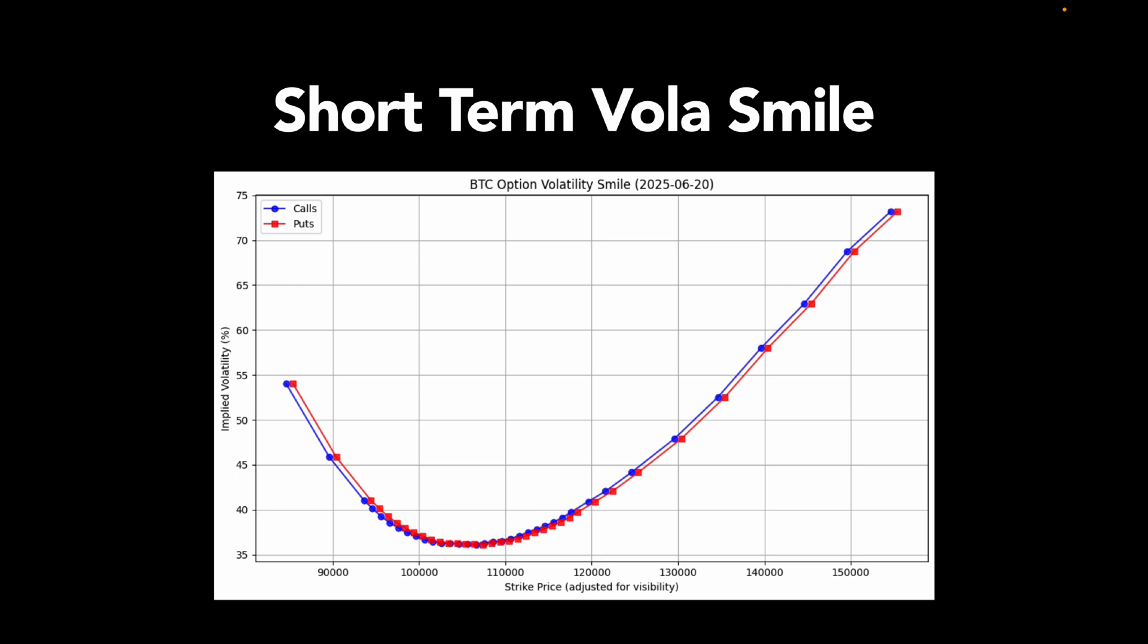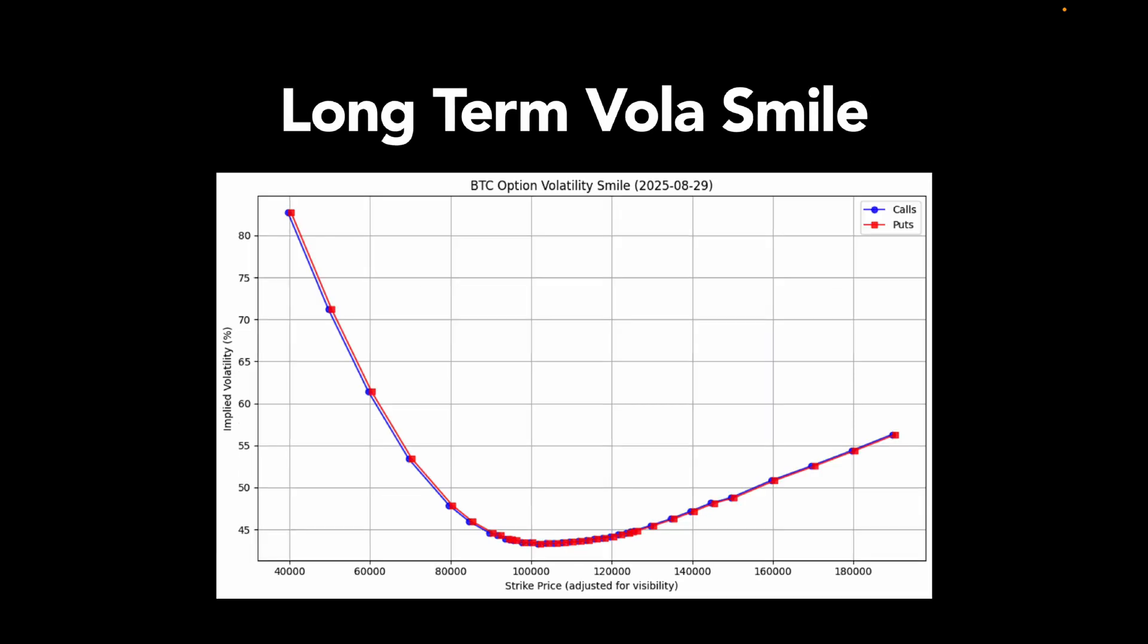Now, please fasten your seatbelts as we are taking a look at the volatility smile for Bitcoin options expiring at the end of August. So this is a longer-term view compared to the June chart. Just like before, we are plotting implied volatility across strike prices. But here's the first thing you notice. This smile is much wider and it's not symmetric. Volatility is lowest somewhere between 95 and 110k, which tells us that's where the market sees the most stability over the next few months. But the shape of the smile has a clear skew and it leans towards the downside.